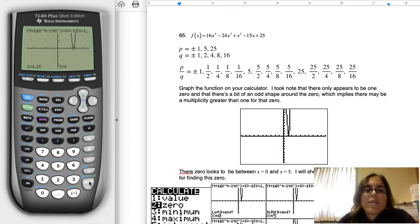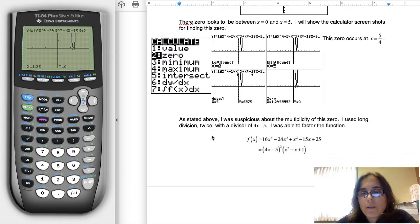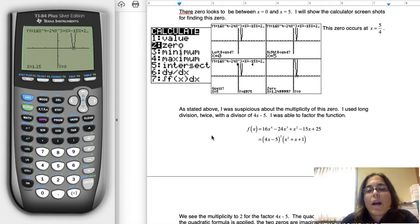And something to take note of is because it touched the x-axis, not crossed through, then I know that I have a multiplicity of 2. So if we scroll down on my solutions, what I have here, I'm pointing to something and you can't see it.